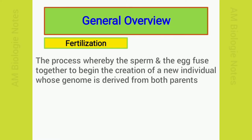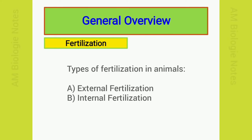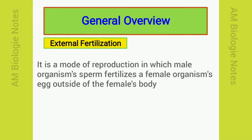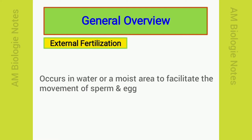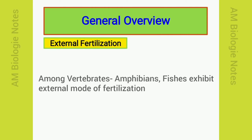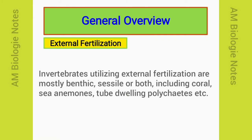Fertilization is the process whereby the sperm and the egg fuse together to begin the creation of a new individual whose genome is derived from both parents. In animals, there are two types of fertilization: external and internal. External fertilization is a mode of reproduction in which the male organism's sperm fertilizes a female organism's egg outside of the female's body. External fertilization typically occurs in water or a moist area to facilitate the movement of sperm and egg. Among vertebrates, external fertilization is most common in amphibians and fish. Invertebrates utilizing external fertilization are mostly benthic, cecyl, or both, including animals such as coral, sea anemones, and tube-dwelling polychaetes.